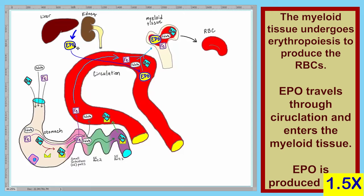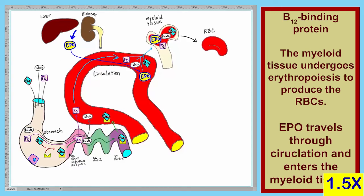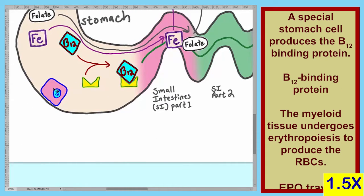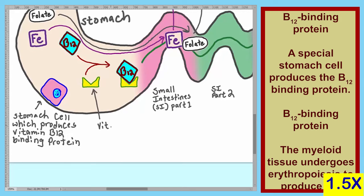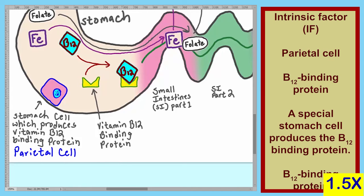Let's annotate a few items. First, the protein that binds to vitamin B12 is produced by a cell of the stomach — the parietal cell. The parietal cell produces the vitamin B12 binding protein. This vitamin B12 binding protein allows vitamin B12 to be absorbed into circulation. This binding protein is called intrinsic factor, and it is a glycoprotein.